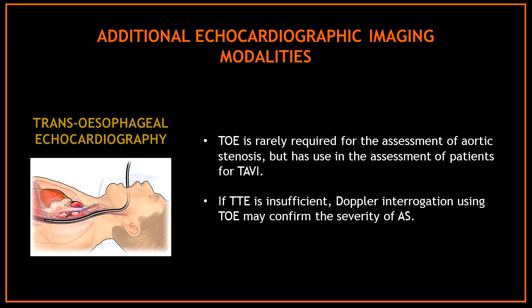Let's talk about some of the additional echocardiographic imaging modalities in the assessment of aortic stenosis. First we have transesophageal echocardiography. Transesophageal echocardiography is rarely required for the assessment of aortic stenosis but has use in the assessment of patients for TAVI. If transthoracic echocardiography is insufficient, Doppler interrogation using transesophageal echocardiography may confirm the severity of aortic stenosis.